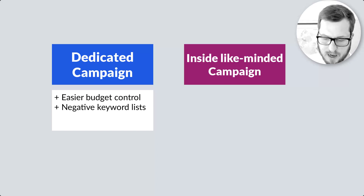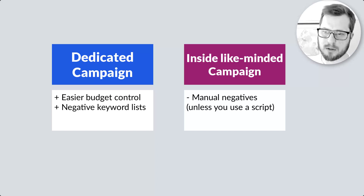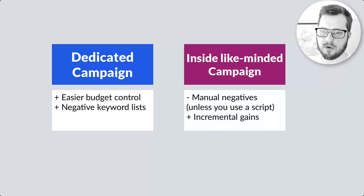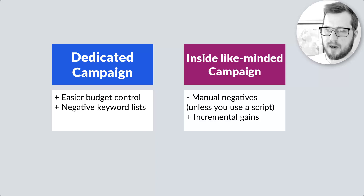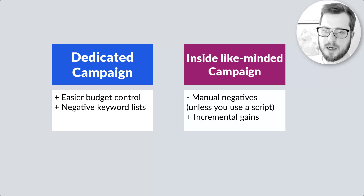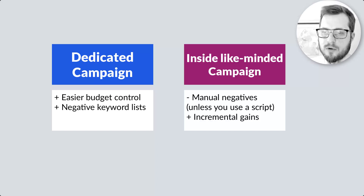So DSA in a campaign or DSA in an ad group — I would argue it doesn't really matter. DSA is supposedly incremental because of machine learning. If you have DSA inside ad groups inside a related campaign, a like-minded campaign — simple way to look at it: let's say we've got cars and bikes. You've got a campaign for cars, a campaign for bikes. You put your DSA ad group targeting a cars landing page in the cars campaign. That's what I mean by a like-minded or related DSA ad group to the campaign level.